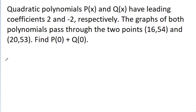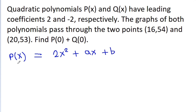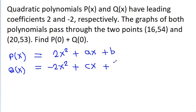We have been given that the quadratic polynomial P(x) has leading coefficient 2, which means it equals 2x squared plus Ax plus B. And Q(x) has leading coefficient minus 2, which means it equals minus 2x squared plus Cx plus D. We have to find the value of P(0) plus Q(0), where P(0) equals B and Q(0) equals D.